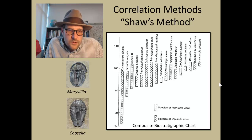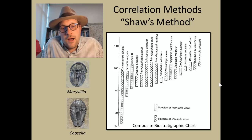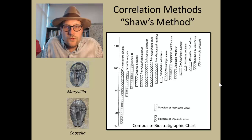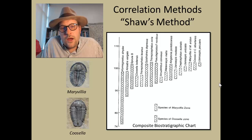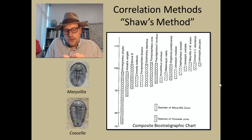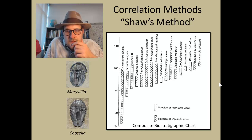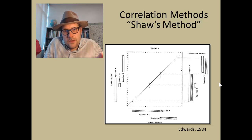Here is another application: we can use the correlation method to build up a composite biostratigraphic chart. In this case we have two species of trilobites — Merivillia and Kouzilla — found in different types of depositional environments. We can look at what other species co-occur in the rocks with these two species. There is some co-occurrence, but other species are only found in one or the other, indicating a biological limiting factor in the habitat.